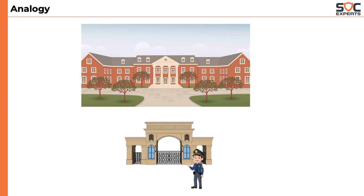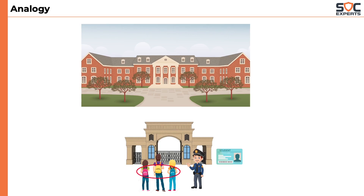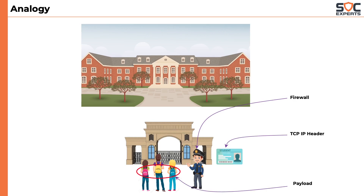Let me highlight this with another example. Consider a college campus security guard standing at the entrance of the gate. He will allow or disallow anyone from entering the campus based on the ID card the student shows — if a student has an ID card, he or she will be allowed in. But what about the things they are carrying in the bag? They might be carrying drugs or guns, which are obviously bad for the college campus. But the security guard does not bother about the contents of the bag — he takes action purely based on the ID card. Similarly, a traditional firewall only scans the TCP/IP header and does not bother about the payload.